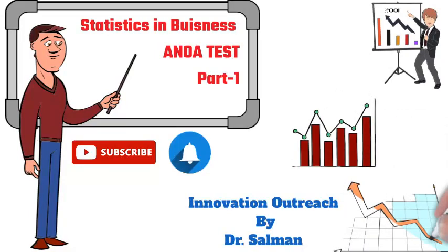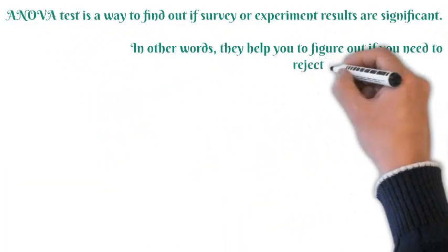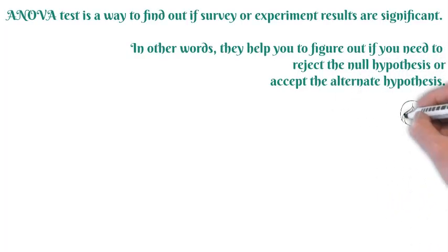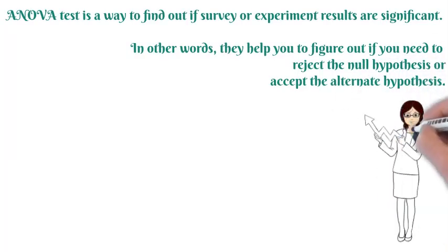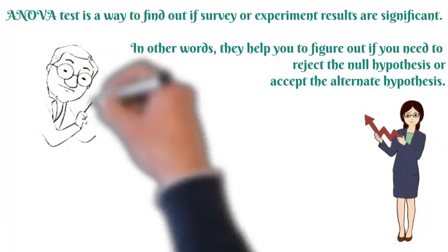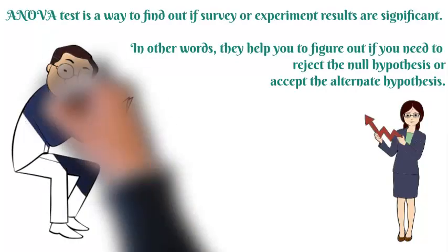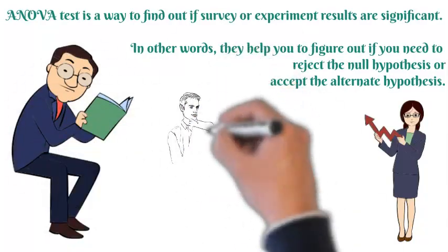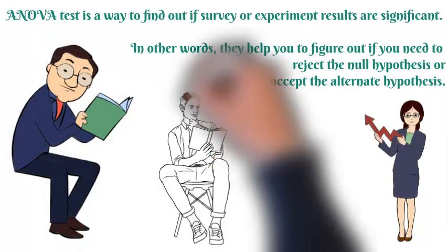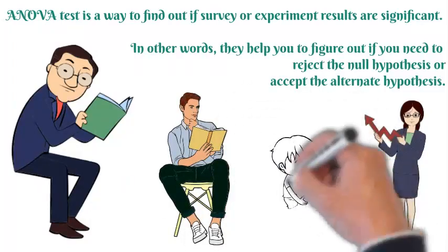ANOVA works by comparing variance estimates: one due to chance factors alone, and one due to chance plus treatment effect. An ANOVA test is a way to find out if survey or experiment results are significant — in other words, it helps you figure out if you need to reject the null hypothesis or accept the alternative hypothesis. Basically, you are testing groups to see if there is a difference between them.